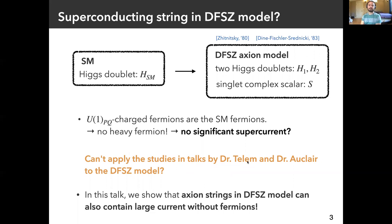How about the DFSZ model? In the DFSZ model, the Higgs sector of the standard model is extended so that there are two Higgs doublets H1 and H2, and one complex scalar S. The Peccei-Quinn charged fermions are the standard model fermions, so we have no heavy fermion in the model. It seems that the axion string in the DFSZ model contains no significant supercurrent. Someone might worry that we can't apply the studies by Dr. Thaym and Dr. Alclair to the DFSZ model. But don't worry — in this talk, we show that the axion string in the DFSZ model can also contain large current without fermions, so we can apply their studies to the DFSZ model as well.